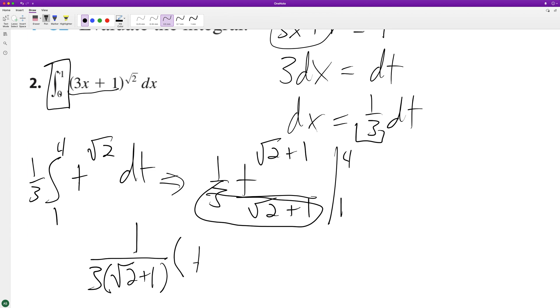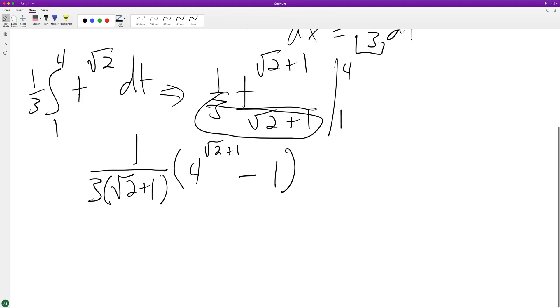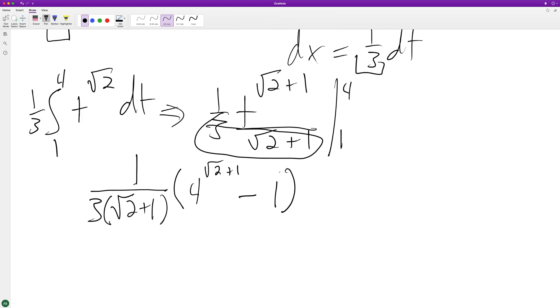So this becomes 4 raised to the square root of 2 plus 1, minus 1 raised to the square root of 2 plus 1, which is just 1. All over 3 times the square root of 2 plus 1, and that's the final answer.